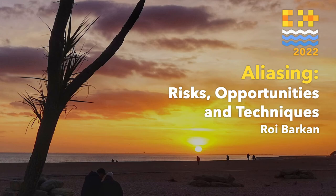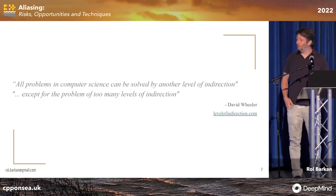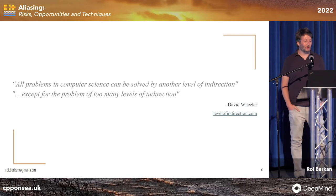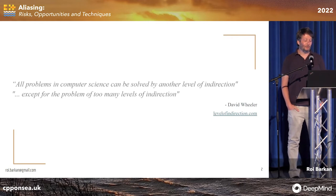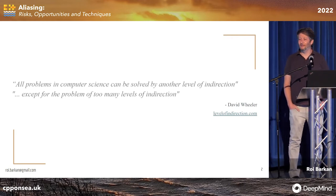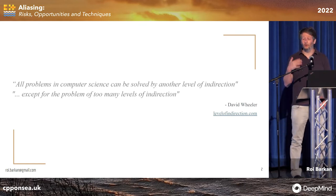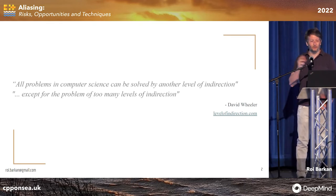My name is Roy Barkan, and we'll talk about aliasing today. I think it's a relatively subtle and complex topic, but we can get through it. I'll start off with a short quote from the computer science world: all problems in computer science can be solved by another level of indirection, except for the problem of too many levels of indirection. This is quite a known quote from our field, typically discussed when talking about higher-level design and architecture problems, but I think it has a little bit of importance and meaning to our topic as well.